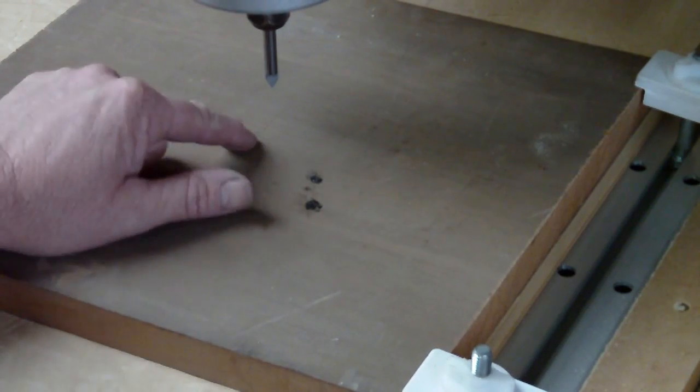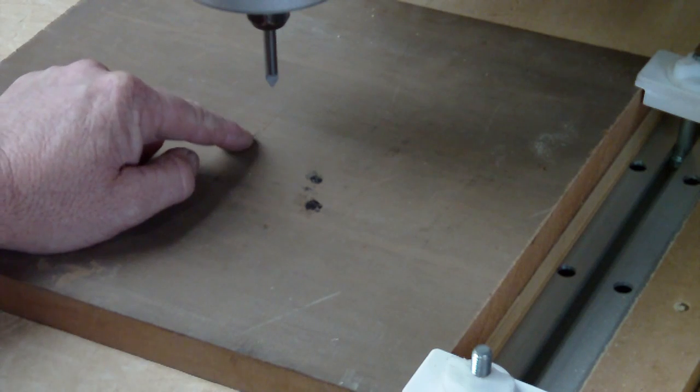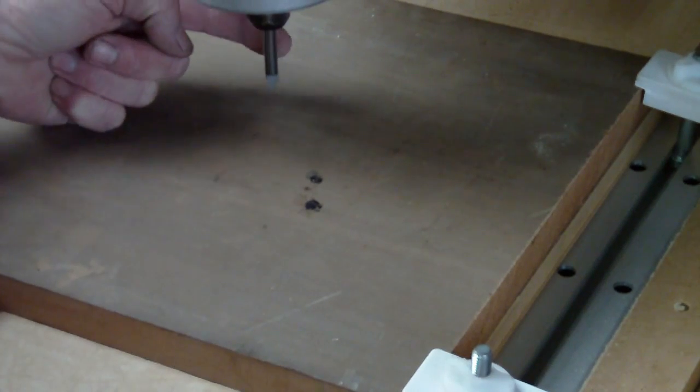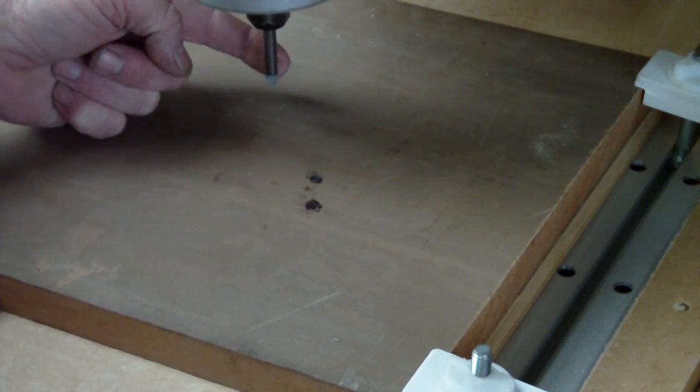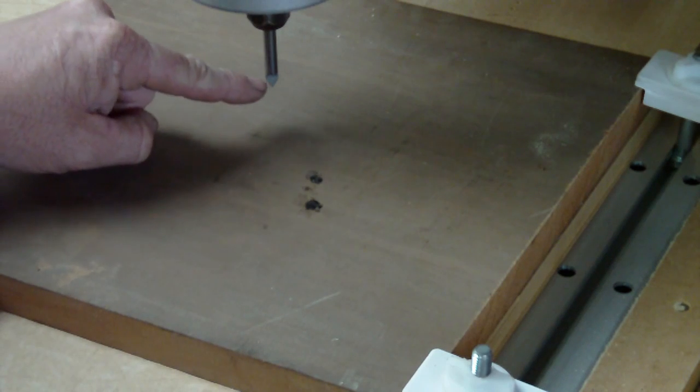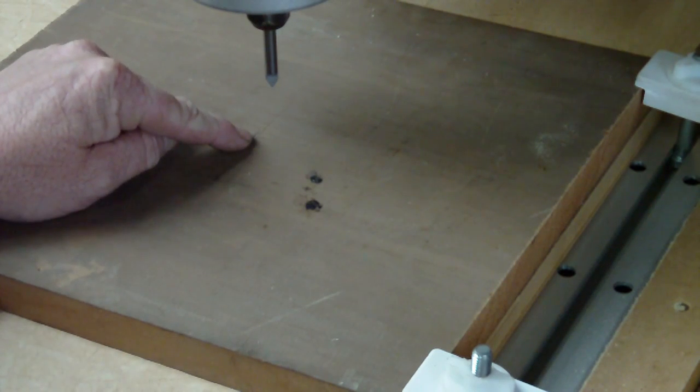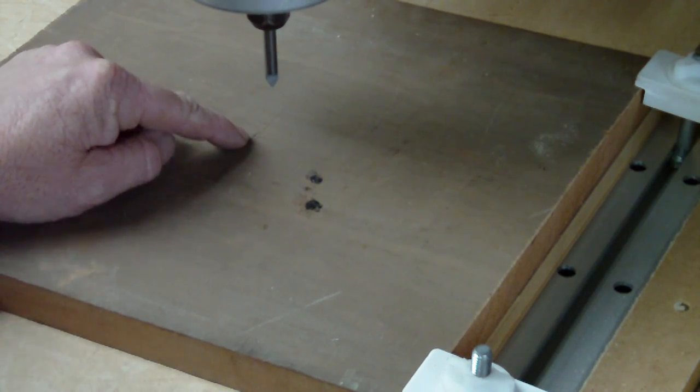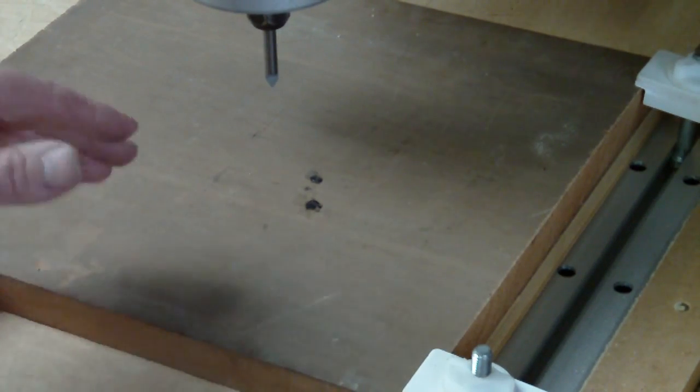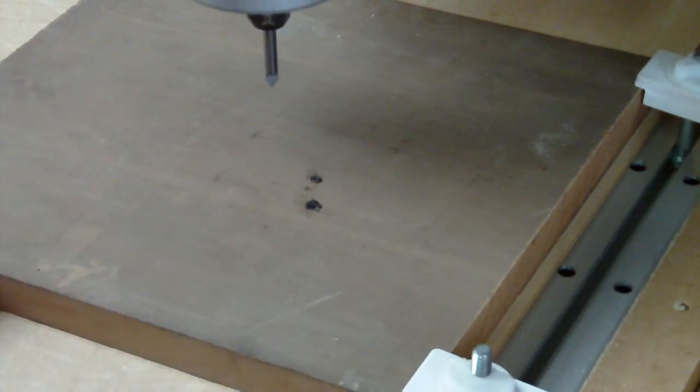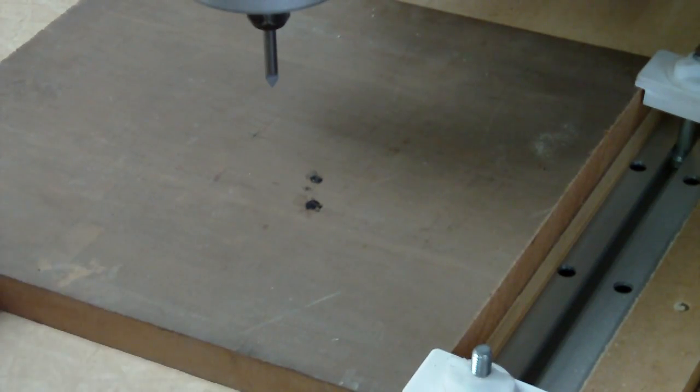I'm starting by marking the center of my material with a cross and then using a 60 degree V bit I'm going to position this right on the spot. This will become my X and Y zero. I'll be doing the same on the other side of the material when I flip it and I'll be able to line it up using the same method to get the plate in perfect registration.